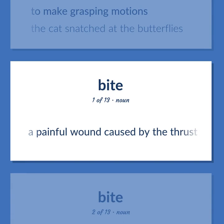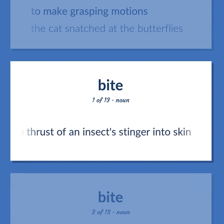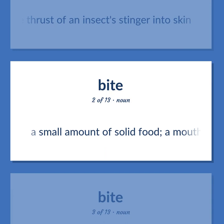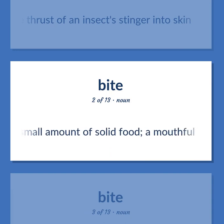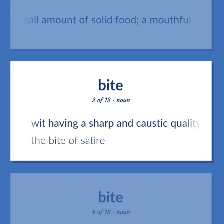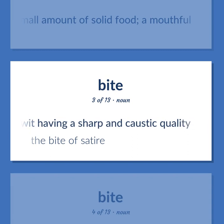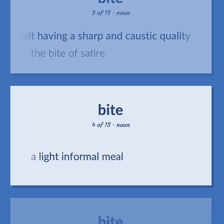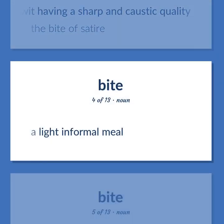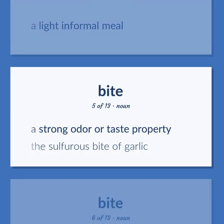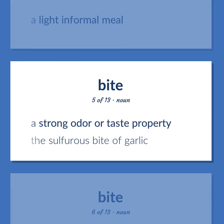Bite: A painful wound caused by the thrust of an insect's stinger into skin. A small amount of solid food; a mouthful. Wit having a sharp and caustic quality — the bite of satire. A light informal meal. A strong odor or taste property. The sulfurous bite of garlic.